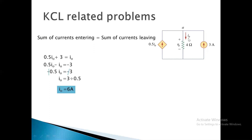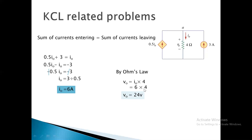Now we find VO. Using Ohm's law, V equals IR. Substituting IO equals 6A into the expression, we calculate VO. The final answer is VO equals 24V.